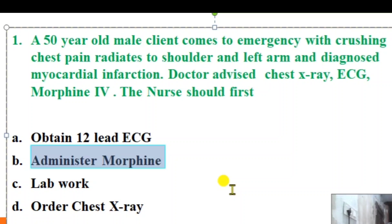We have to check the respiratory rate before administering Morphine. The normal respiratory rate is 12 to 20 breaths per minute. If the respiratory rate is less than 10, we need to monitor carefully before giving Morphine, which is why we need to check the respiratory rate first.